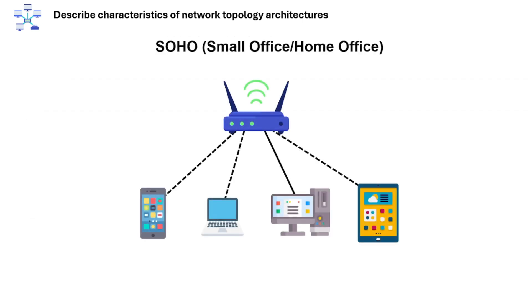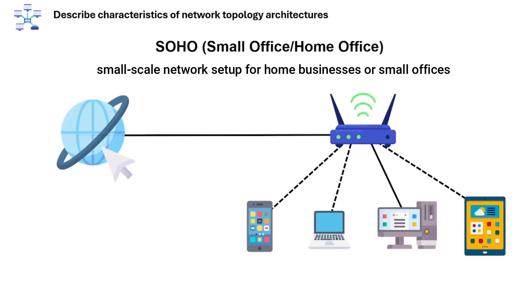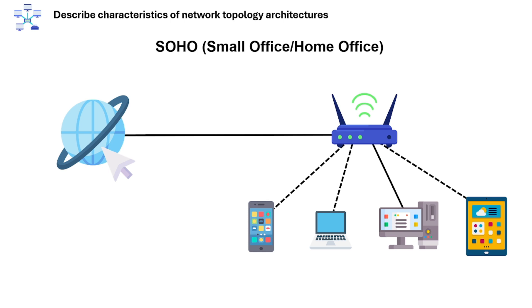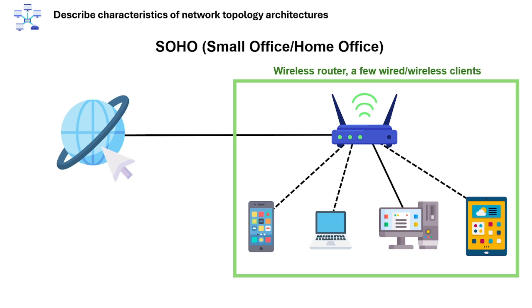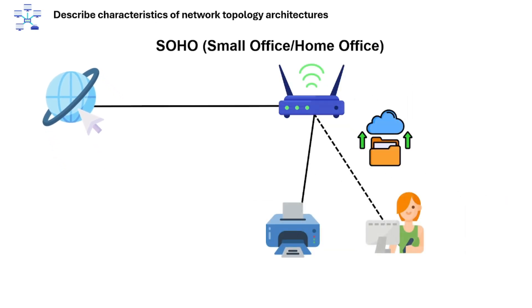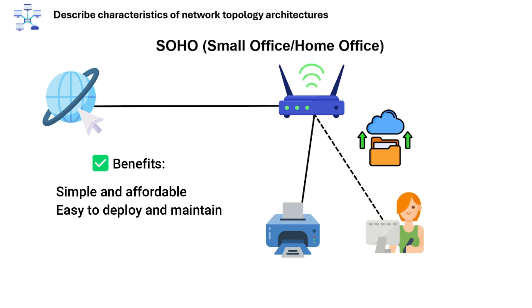Next is SOHO, or small office home office. A SOHO is a small-scale network setup for home businesses or small offices. The devices used are a wireless router or a few wired or wireless clients. It typically combines all networking needs in one device, like a firewall and DHCP. An example is a graphic designer working from home with a laptop, printer, and cloud backup using a single router. The benefits are that it's simple, affordable, and easy to deploy and maintain.